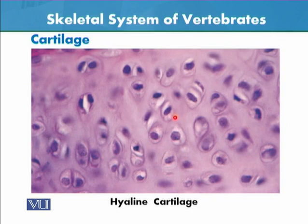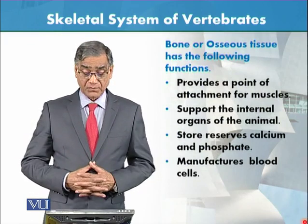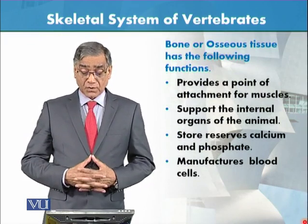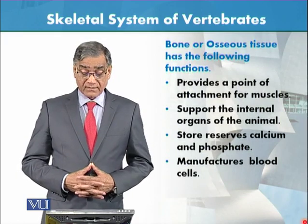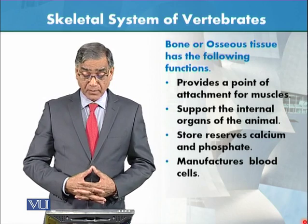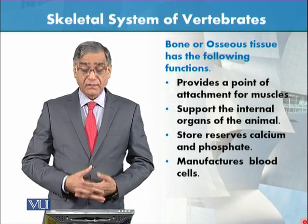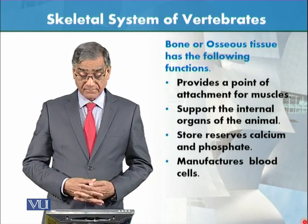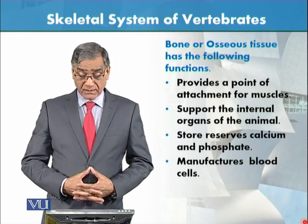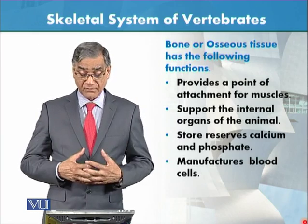This is the bone, which is a hard tissue. It is also called osseous tissue. Its functions include providing a point of attachment for muscles, and they also support and reserve calcium and phosphate.